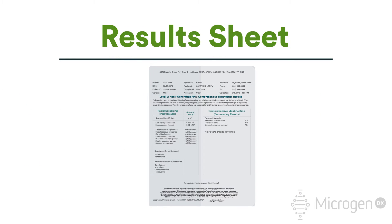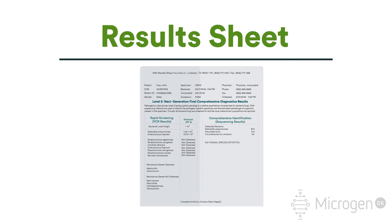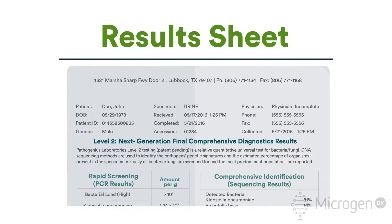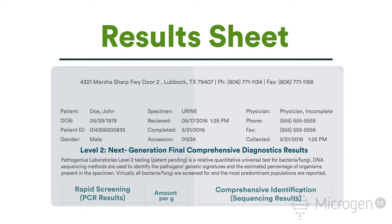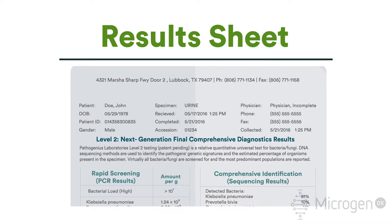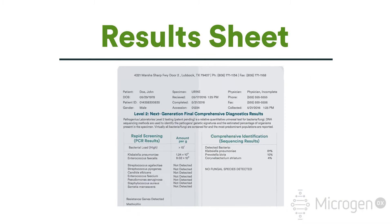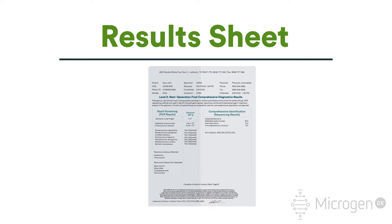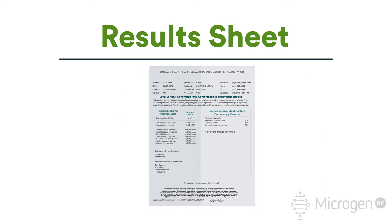Results sheet. At the top of page 1, you will find information relating to the sample, to include patient name, specimen type, and when the test was completed. Below you'll find level 1 results and level 2 results.